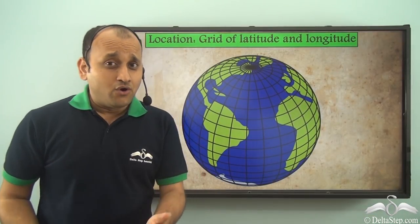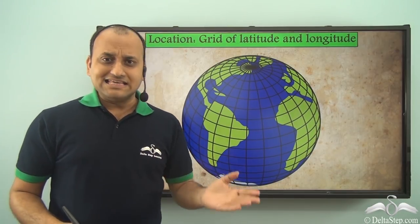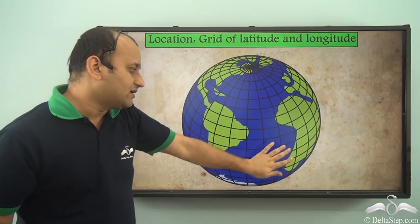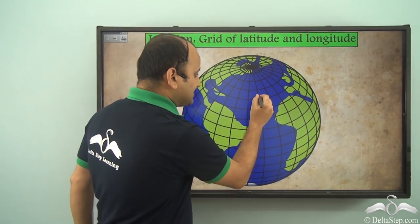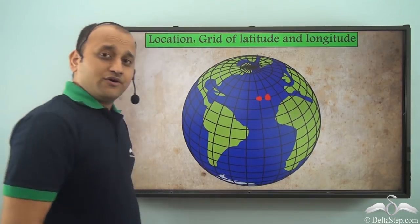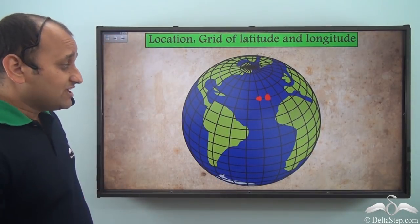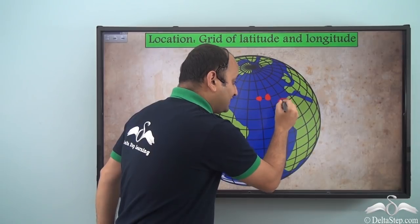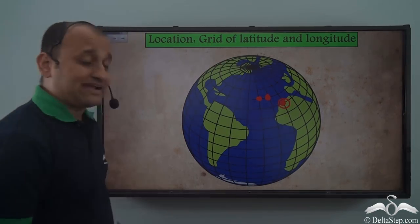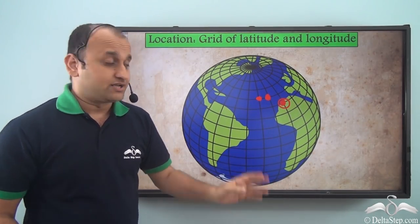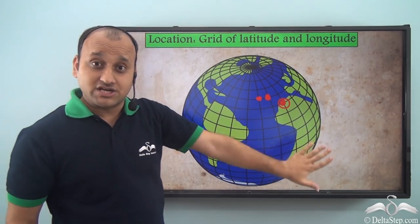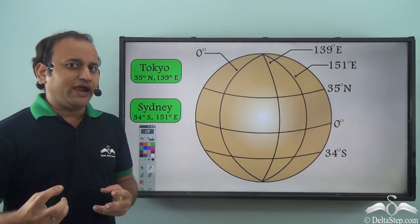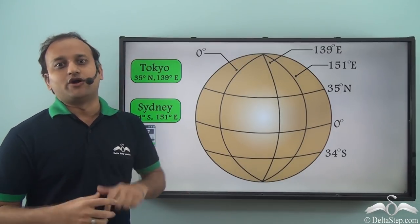Now we know what latitudes and longitudes are. Together, these latitudes and longitudes make up a grid which covers the entire earth's surface. Every point on this grid is one location. Whenever you want to locate something or somebody, we find the location of that person or thing on this grid. This grid defines location on the entire earth's surface. So let's see how we can locate a particular place on planet earth with the help of latitudes and longitudes.